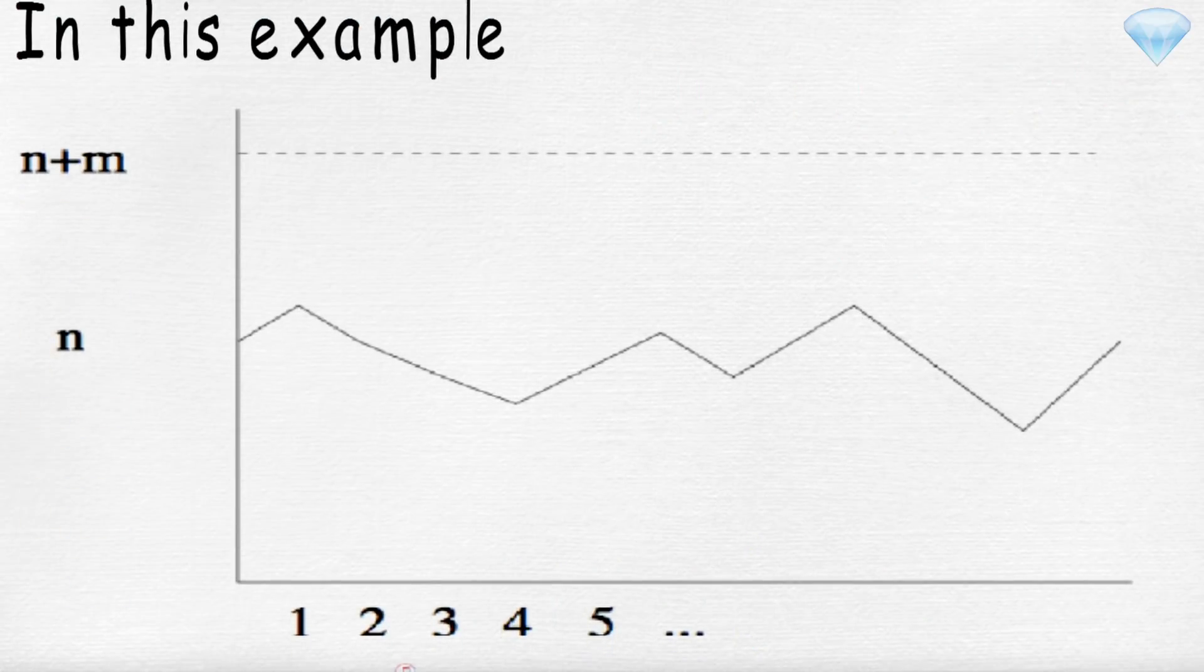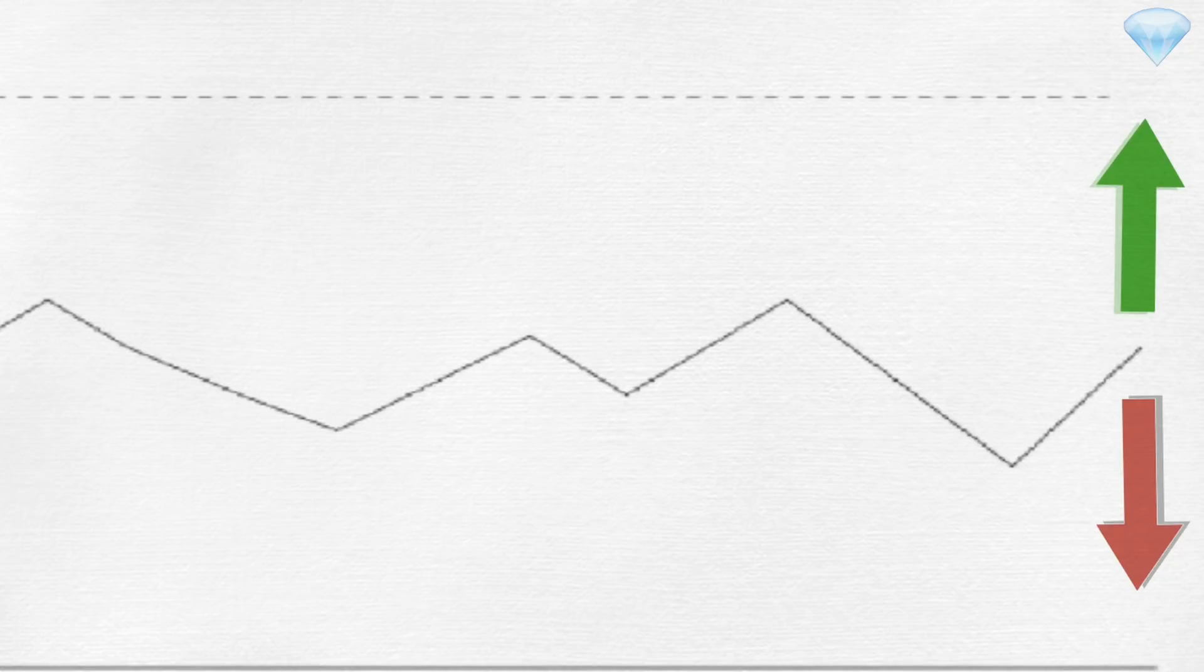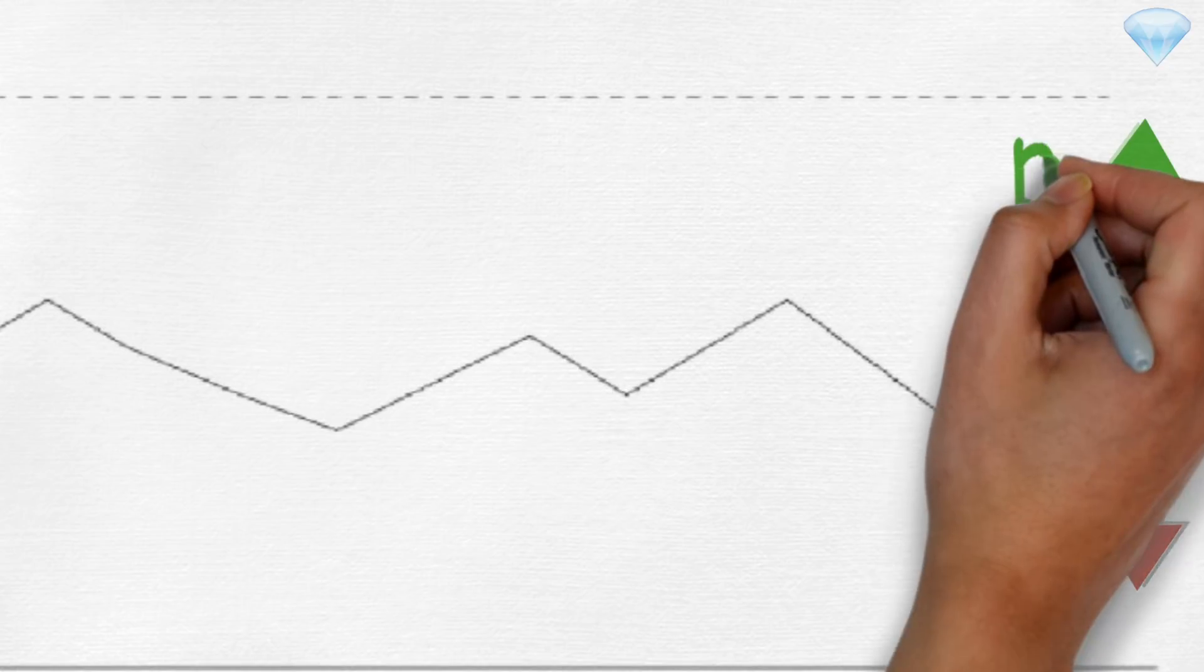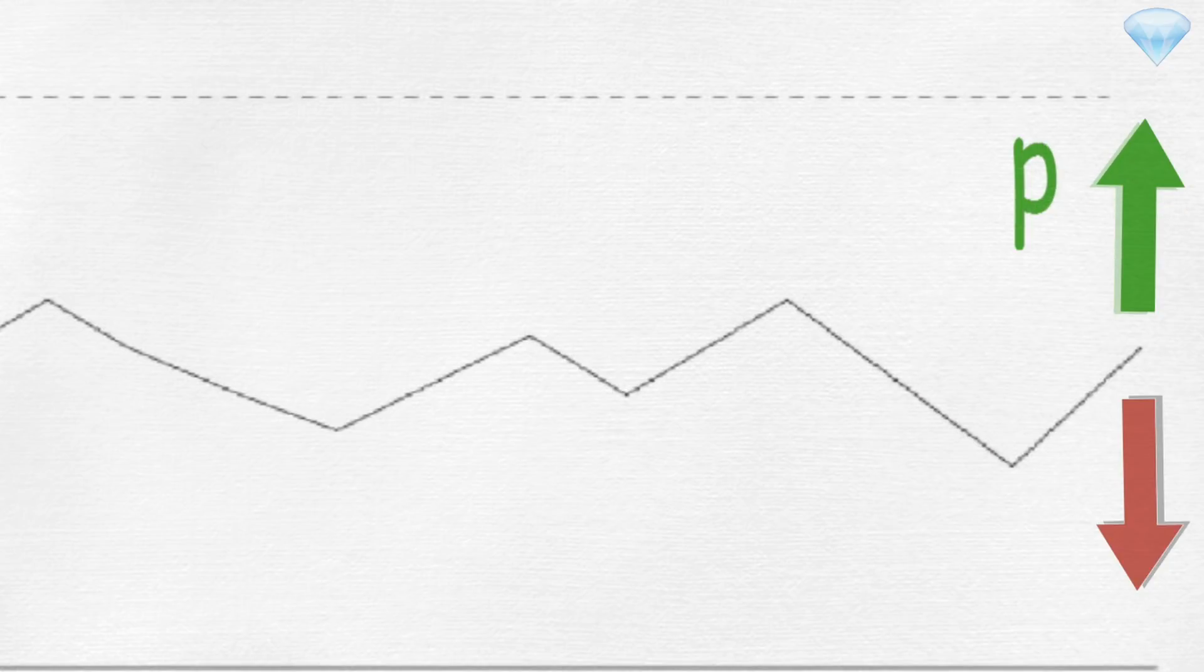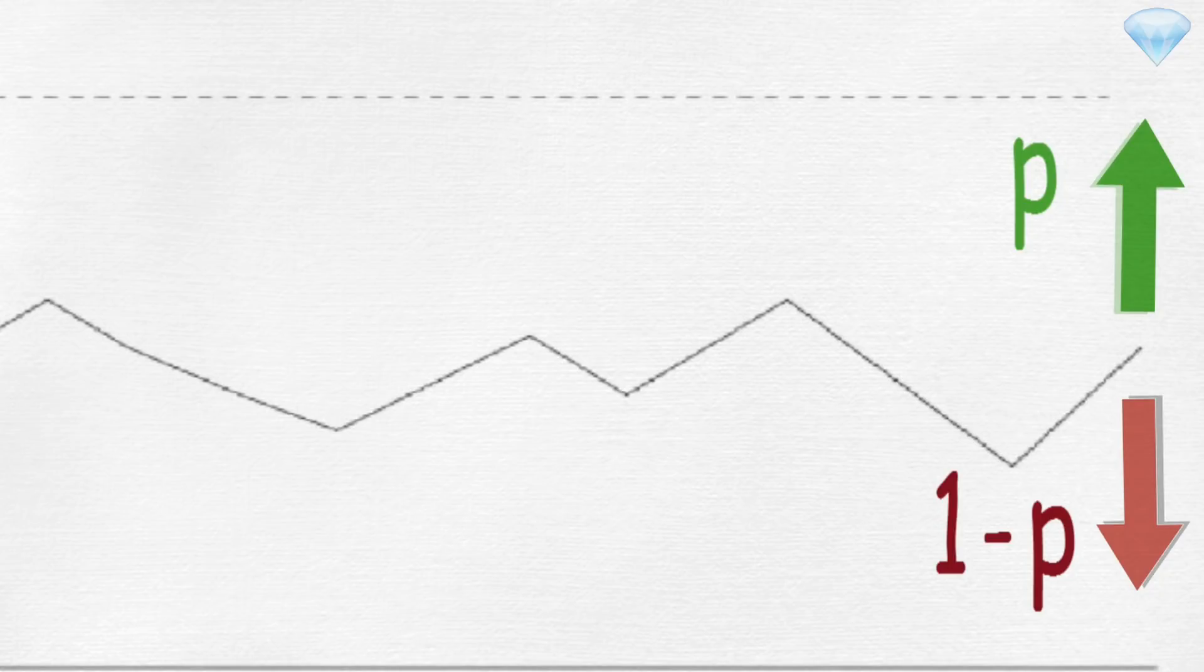In this example, we have a random walk in which the value can go up and down by one at each step, similar to the market moves, as we can see on this diagram. The probability of making an up move at any step is p. The probability of making a down move at any step is 1-p. This random walk is a special type of random walk, where moves are independent of the past.